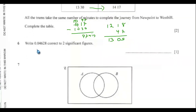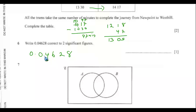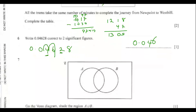Question 6. Write 0.004628 correct to two significant figures. The first significant figure is 4. The second is 6, and the decider digit is 2, so we round down. The answer is 0.0046.